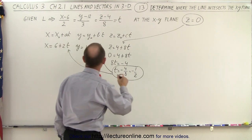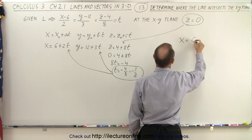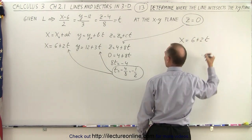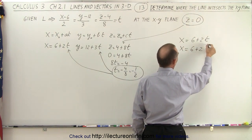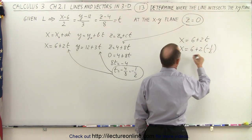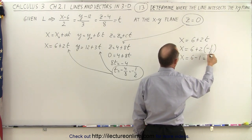So we have x is equal to 6 plus 2t, but realize that t is equal to minus 1 half. So x is equal to 6 plus 2 times minus 1 half. So x is equal to 6 minus 1, or equal to 5.